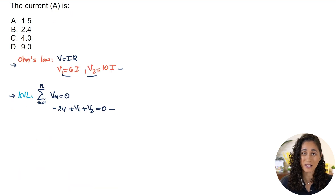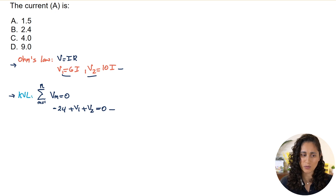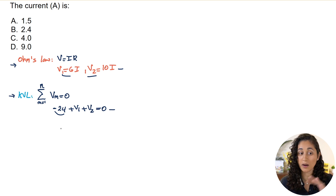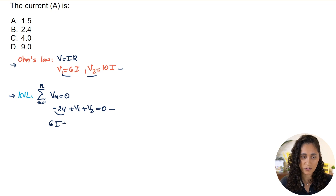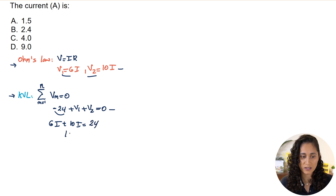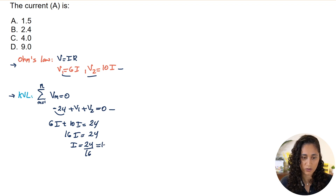Let's plug in the equations. Moving the 24 to the other side makes it positive. Substituting V1 and V2 gives: 6I plus 10I equals 24, so 16I equals 24. Therefore I equals 24 over 16, which gives us 1.5 amps.